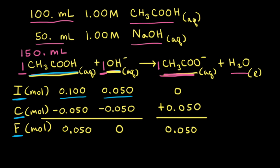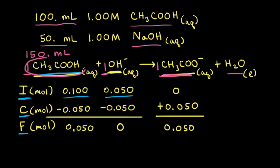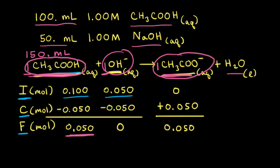A buffer solution consists of significant amounts of a weak acid and its conjugate base. Acetic acid is a weak acid and its conjugate base is the acetate anion. Therefore, the addition of the strong base hydroxide, which neutralized half of the acetic acid, created a buffer solution because we have significant amounts of both acetic acid and its conjugate base, the acetate anion, in solution.